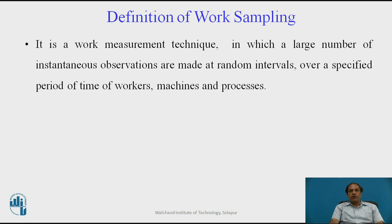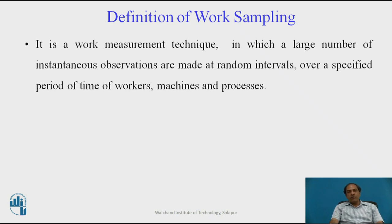Initially we start with what is work sampling. It is a work measurement technique in which a large number of instantaneous observations are made at random intervals over a specified period of time of workers, machines, and processes. Time study and work sampling are the two predominant measurement techniques commonly used for finding out the time required for a job and for norm setting. Both have their own areas of application, though both can be used to find out the time required for a particular operation.